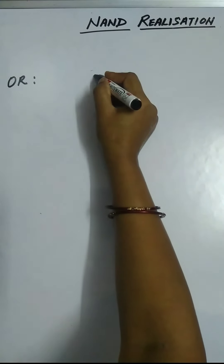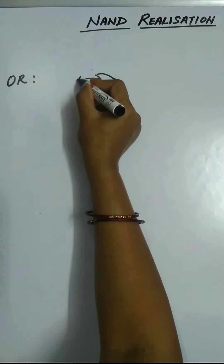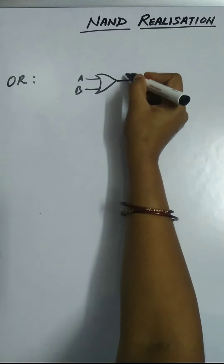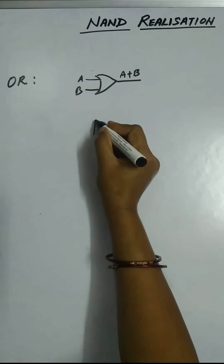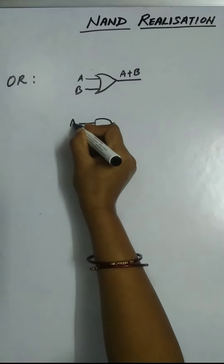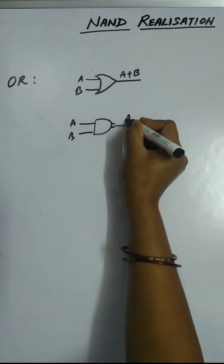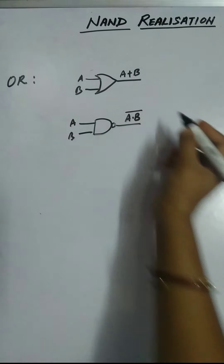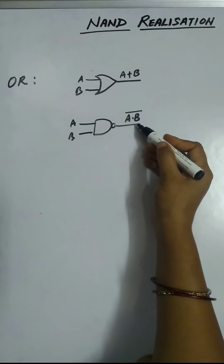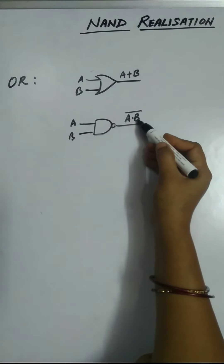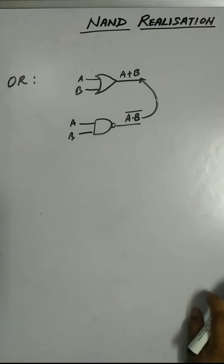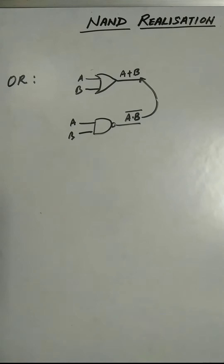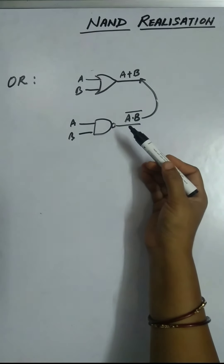Next gate is OR gate. What OR gate does is: if we take two inputs A and B, it produces output A plus B. To implement this using NAND gate, we pass A and B as inputs, so the NAND gate produces A dot B whole bar. We need to convert A dot B whole bar into A plus B.